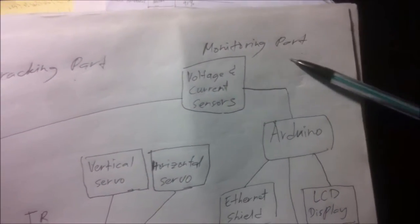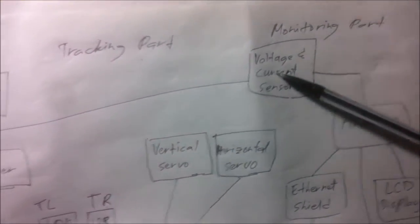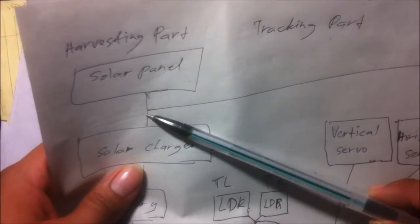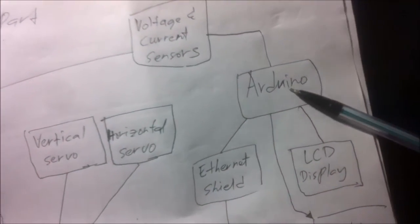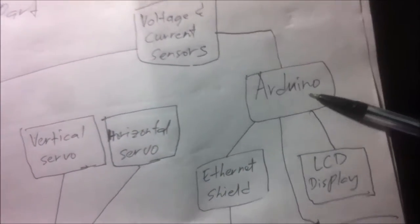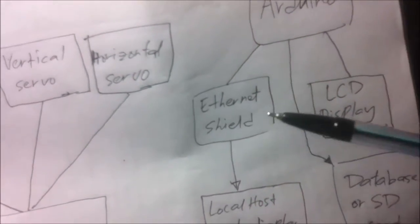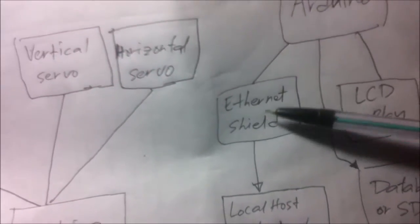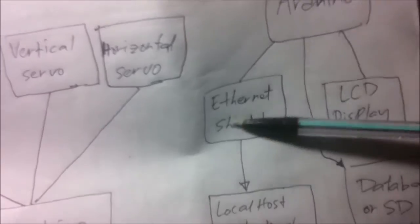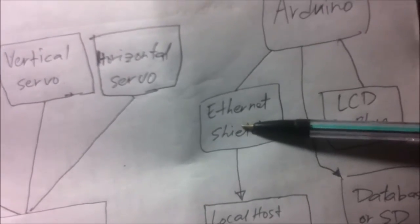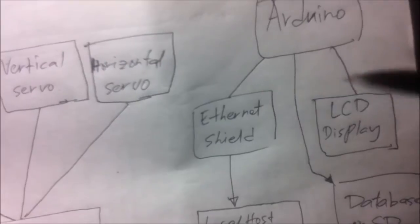In the monitoring part, we use voltage and current sensors to read the voltage and current from the solar panel, along with another Arduino microcontroller and an Ethernet shield. The Ethernet shield is where we connect the router so that we can view the data on a monitor.